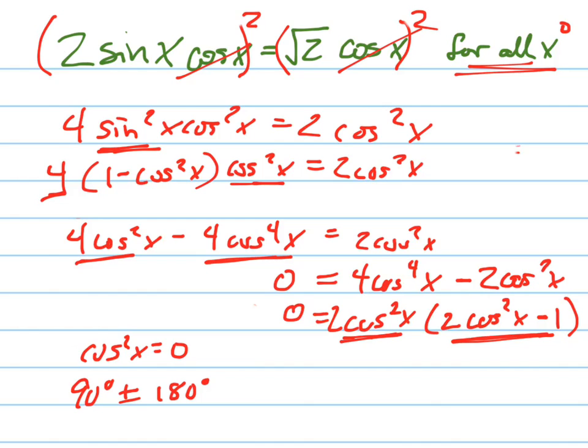And set this equal to zero, which would tell me that the cosine squared x equals positive one half. I'm doing some of the work in my head. Which means the cosine of x equals plus or minus the square root of two over two.